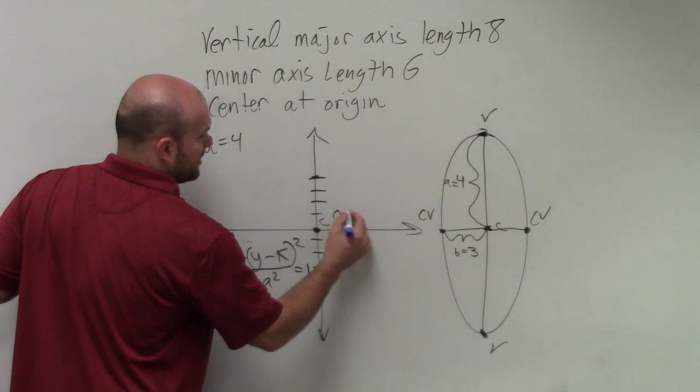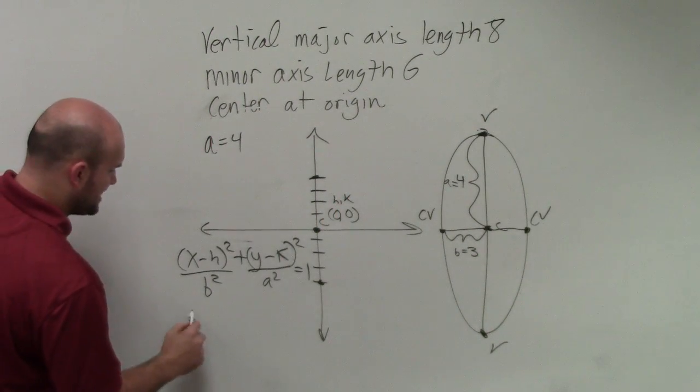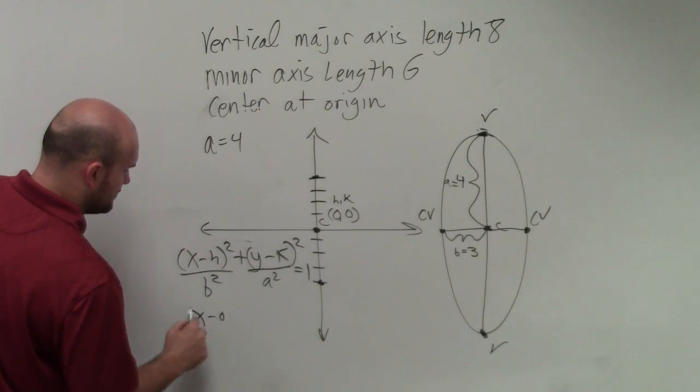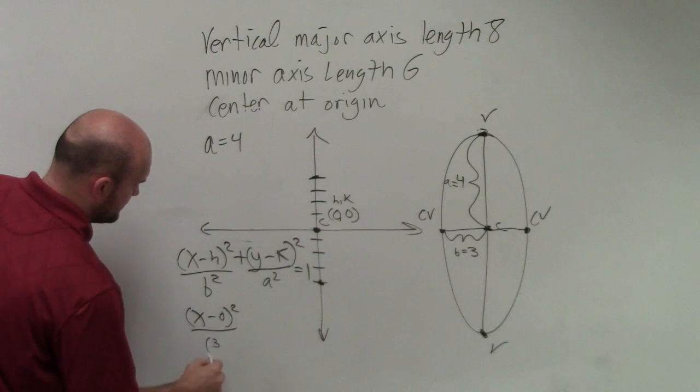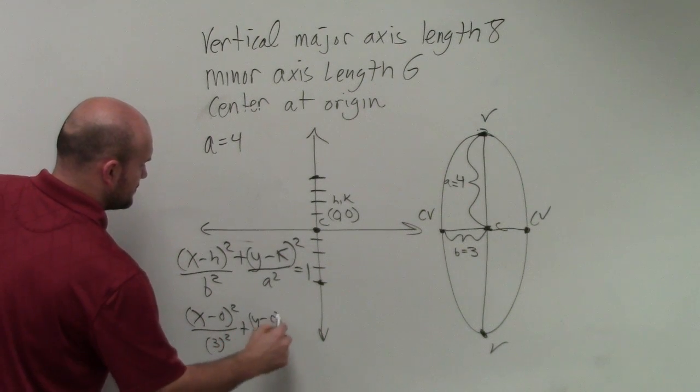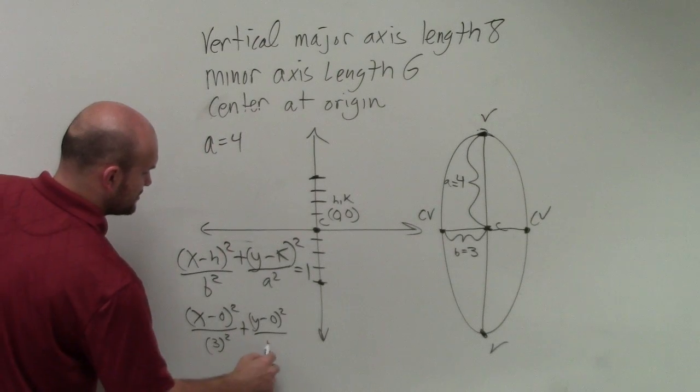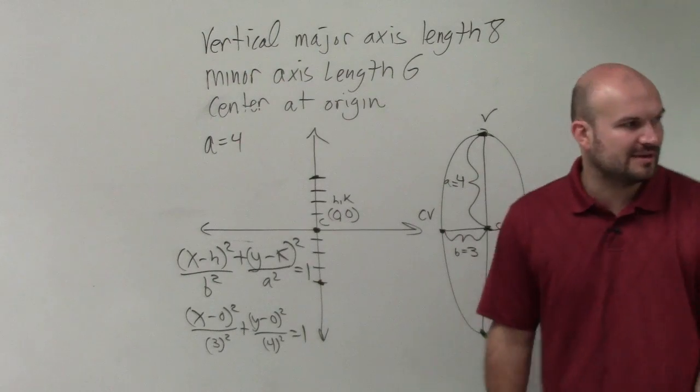Now the origin is the coordinate point 0, 0. So that's h and that's my k. I can just plug in all the information. x minus 0 squared over b, which is 3 squared, plus y minus 0 squared over a squared, which is 4, equals 1. So does everybody see how I just plugged in the information?